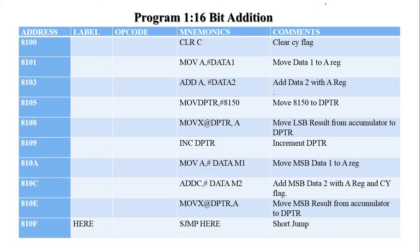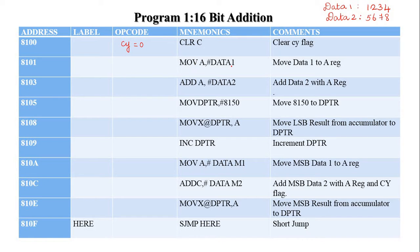For example, Data 1 is 1234H and Data 2 is 0567H. The first instruction is CLRC, which clears the carry flag — that is, CY equals 0. Then the second instruction moves Data 1's LSB, which is 34H, into the accumulator register.